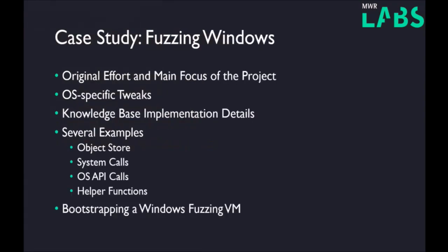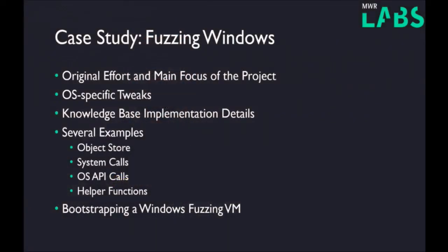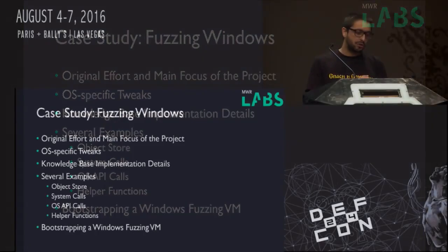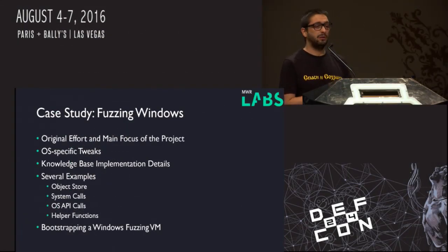I'm going to hand over to Georgie, who's going to go through the Windows case study. As James already mentioned, we initially started with the idea of developing a Windows kernel fuzzer, and this actually remained our focus despite repurposing the fuzzer for OS-agnostic operations. The second half of the talk is dedicated to getting the fuzzer working efficiently on Windows and writing all of these custom modules for the Windows operating system.